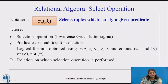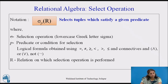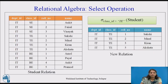P is a predicate or condition for selection. It is a logical formula obtained using comparison operators like equal to, not equal to, less than, greater than, and so on, along with the connectives AND, OR, NOT. R is the relation on which the selection operation is performed. When we want specific tuples, we use the selection operation in relational algebra.